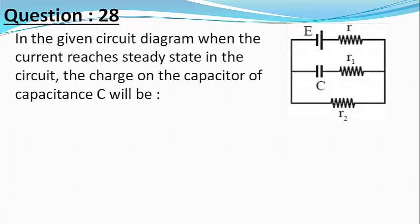Our question is: in the given circuit diagram when the current reaches the steady state in the circuit, the charge on the capacitor of capacitance C will be.